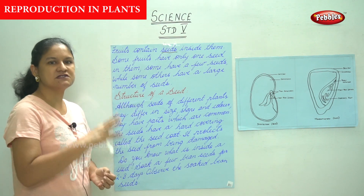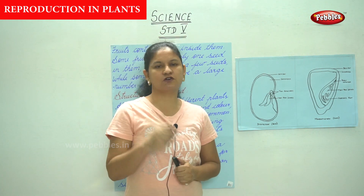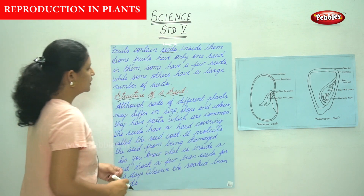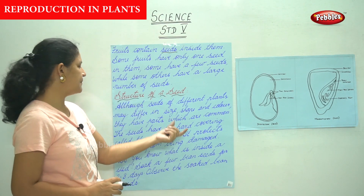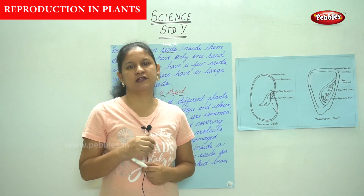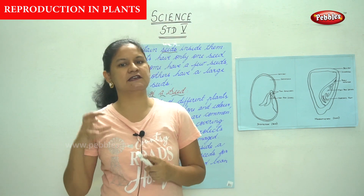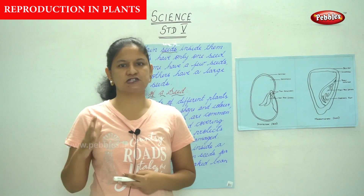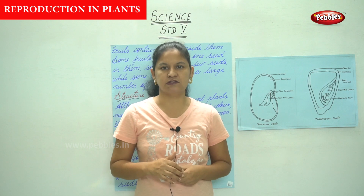Now we are going to talk about the structure of a seed. Even if you look at a seed, each fruit's seed structure differs. All seeds of different plants may differ in size, shape, and color — for example, the mango seed and the papaya seed differ in size, shape, and color — though the parts of the seed remain the same for all.